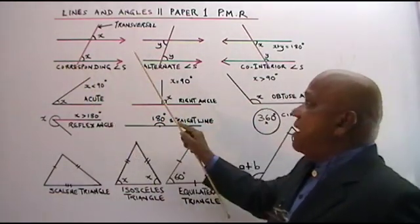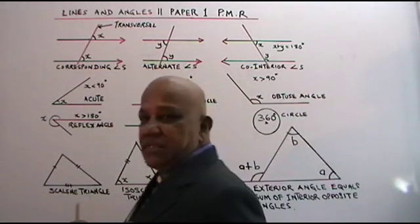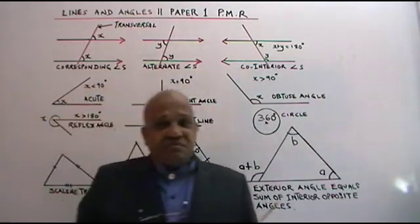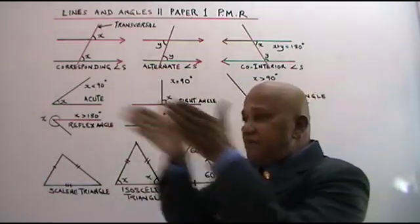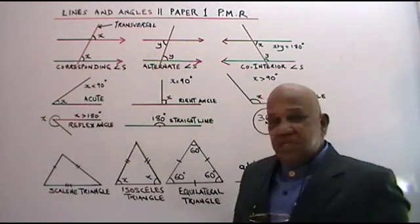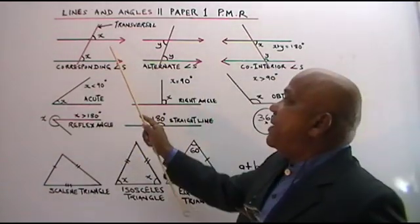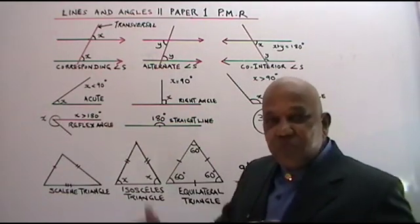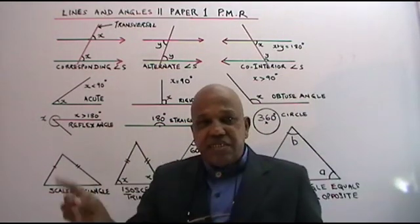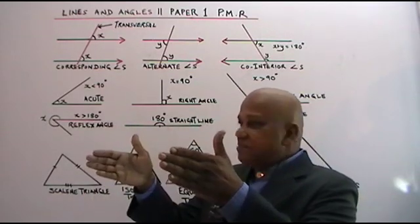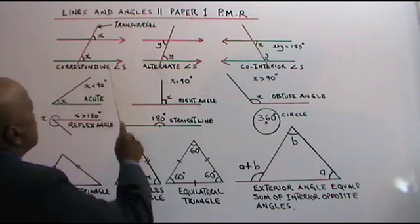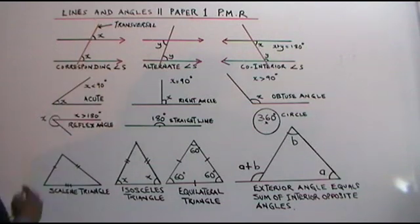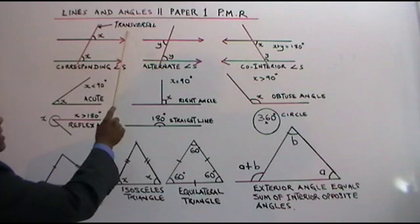These two lines are parallel. What's the meaning of parallel lines? Parallel lines means lines which do not meet — forever, they will never meet. Those lines are known as parallel lines; other lines will meet. Now, these two are parallel lines. This line cutting across the pair of parallel lines is known as the transversal.